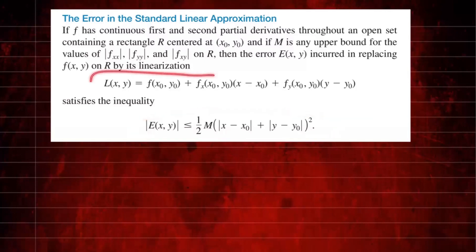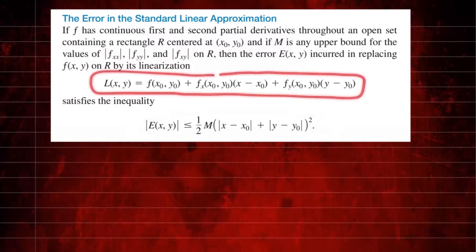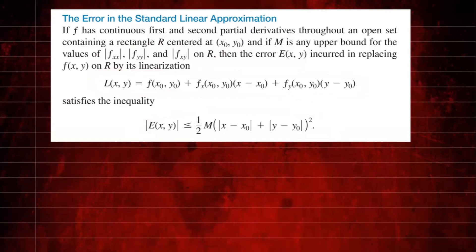This is our linearization of the function. We're going to call it a local linearization because this can be used to approximate the function value as long as you're nearby (x₀, y₀). So it's a local linearization. Since we're approximating, there's going to be some error, and we want to know what's the magnitude of the error. That's given by this formula.